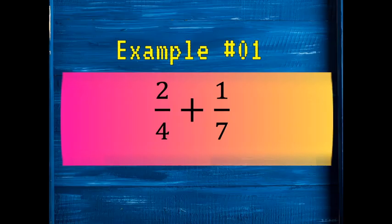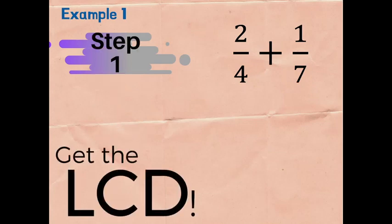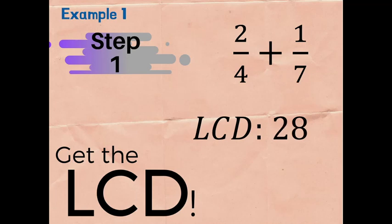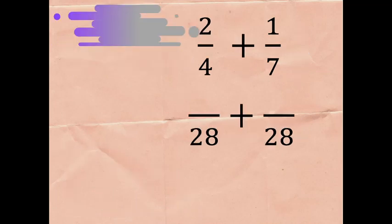For example number one: two-fourths plus one-seventh. So we have 2/4 plus 1/7. First step is to get the LCD — LCD stands for the least common denominator. We get the LCD of 4 and 7, which is 28.